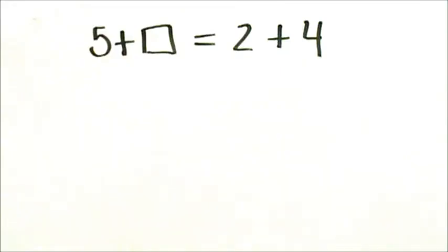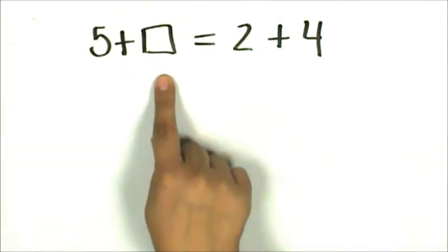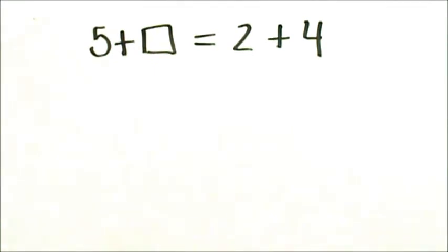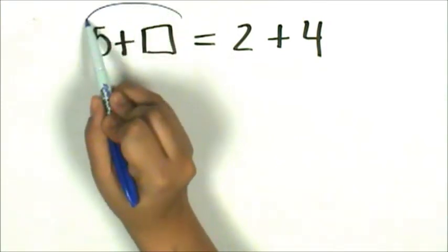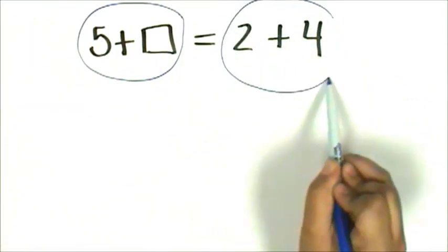Let's determine the number that represents the unknown in 5 plus an unknown equals 2 plus 4. That equals sign represents a relationship where the expressions on each side have the same value. That means 5 plus an unknown has the same value as 2 plus 4.